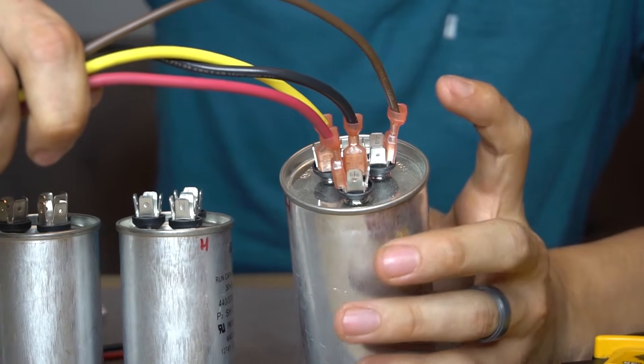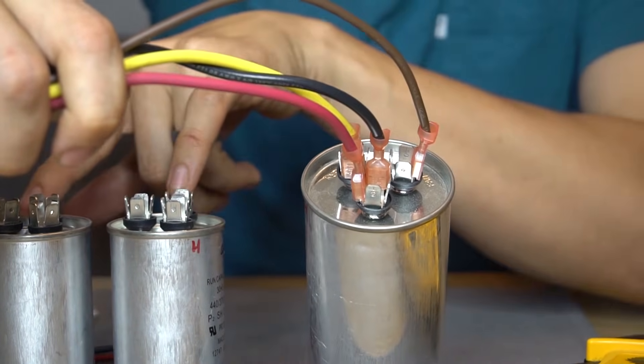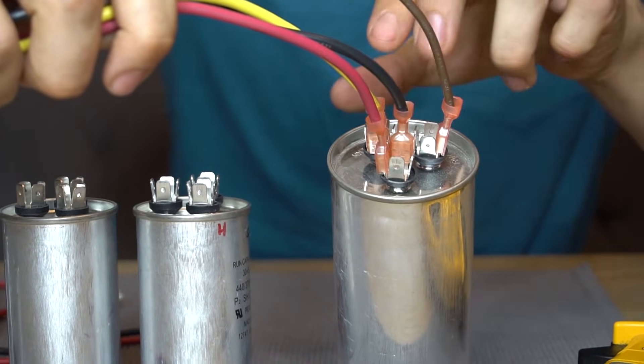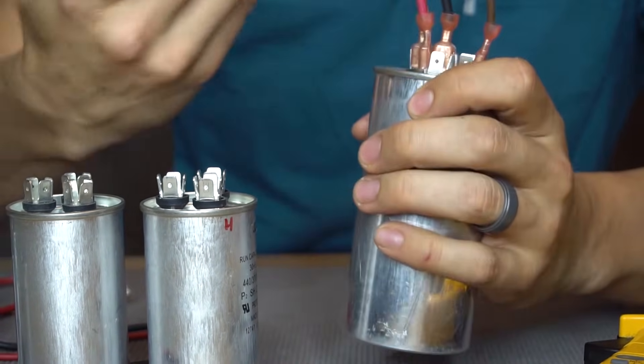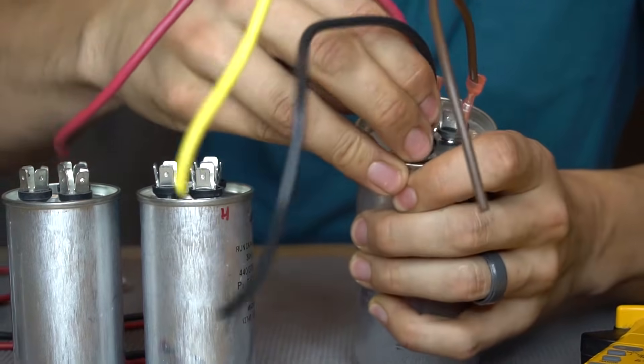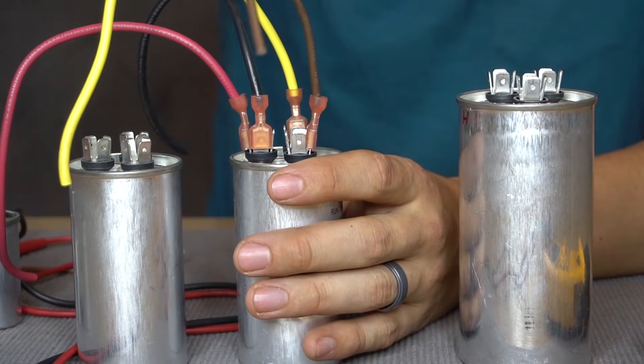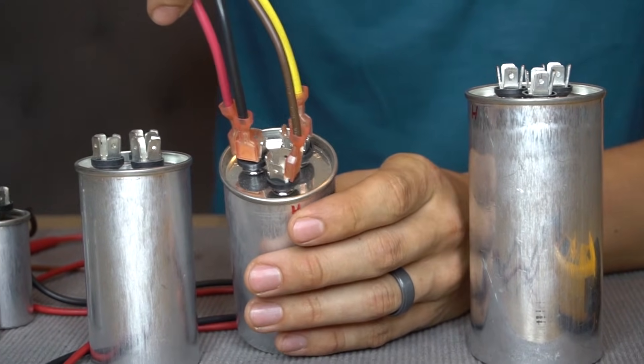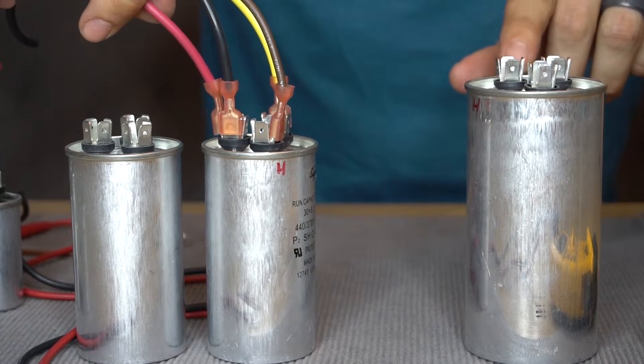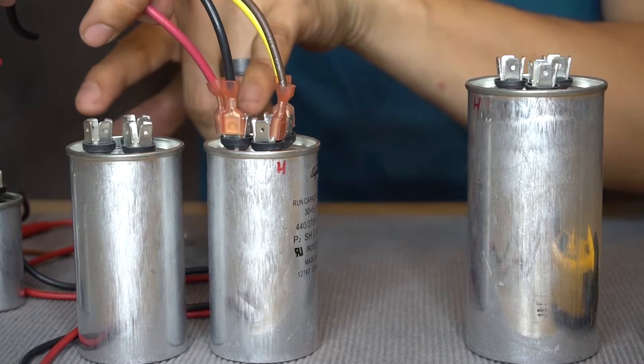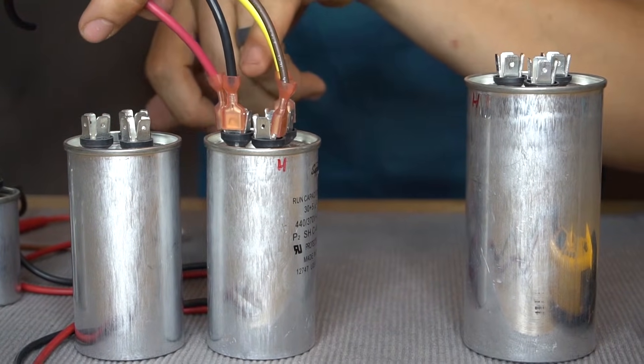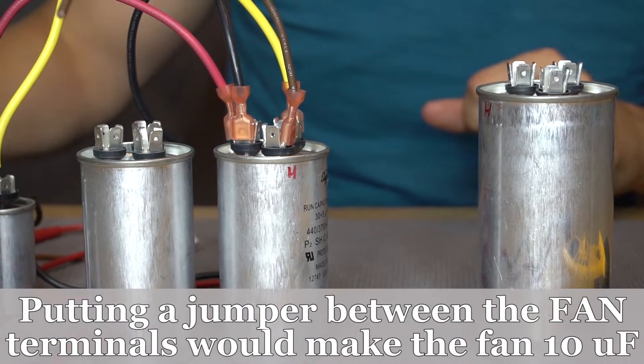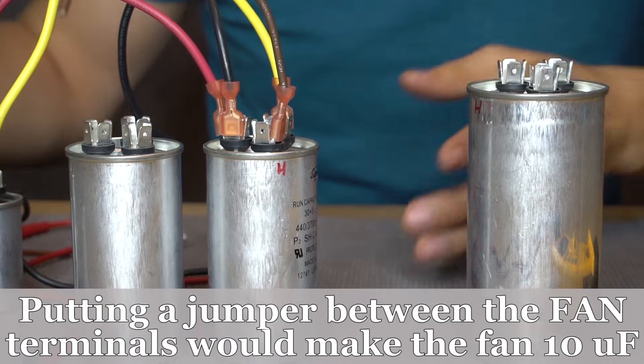So in order for you to take two 30 microfarad capacitors and turn it into a 60, you would basically transfer these wires to one of the 30s in the same positions. Okay, so I transferred all the wires from the 60 microfarad to the 30 in the same places, the herm, the common, and the fan. So I'm trying to create a 60 by 5 out of two capacitors that are both 30 by 5. So I just need to combine the compressor part and not the fan, so we're not going to touch the fan terminals at all.